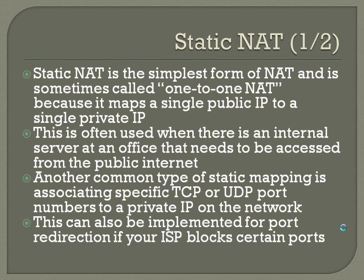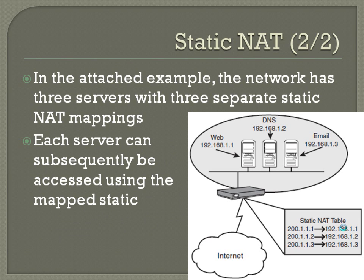Static NAT can also be used for port redirection if your ISP blocks certain ports. For example, if your ISP prevents you from running a web server, you can set it up so requests go to port 8080, which is not blocked, and then are redirected to port 80 with NAT. In the attached example, the network has three servers with three separate Static NAT mappings: 200.1.1.1 maps to 192.168.1.1, 200.1.1.2 maps to 192.168.1.2, and 200.1.1.3 maps to 192.168.1.3 — your web server, DNS server, and email server each statically mapped to a separate public IP.